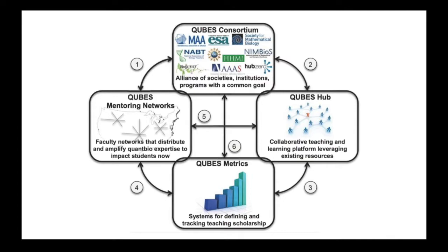What we consider to be the heart of CUBES are the faculty mentoring networks. These are sort of formal, long-term engagements — over the course of a semester usually — where we meet regularly online, and if we can, we meet first in person at a meeting. This allows us to work with faculty as they're implementing pedagogical strategies or materials in their classrooms, trade pros and cons of different strategies, and help them in modifying materials to add in quantitation. This is really the heart and soul of what we do.